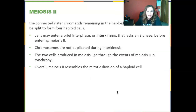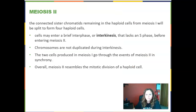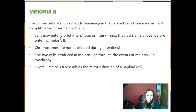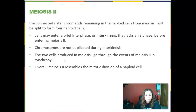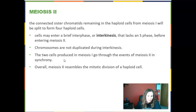That's why we have to go through meiosis II. The cells may enter a brief interphase called interkinesis, lacking the S phase — so no DNA duplication this time. The two cells produced in meiosis I will go through all events of meiosis II in synchrony, and we'll end up with four daughter cells when all is said and done.